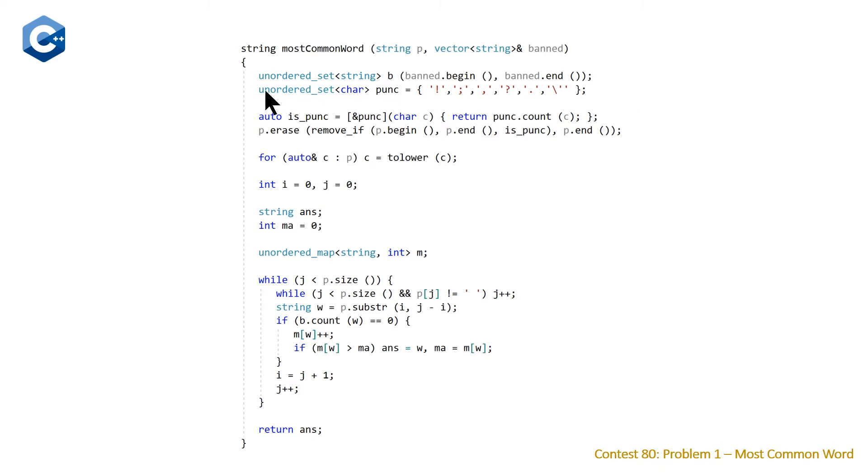And then, the next three lines are dedicated to removing the punctuation from our paragraph p. So, we create an unordered set of characters that are all the punctuation characters that we need to remove. Then, we create a lambda that's going to tell us if the current character we're looking at is in our punctuation set. And then, we use the erase remove if idiom, or the erase remove idiom, to first sort of partition all of our punctuation characters to the right, and then erase those characters from our string.